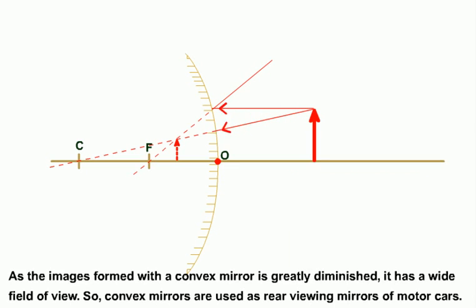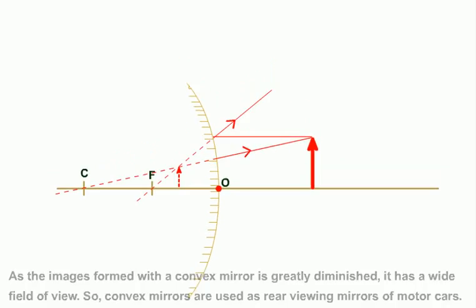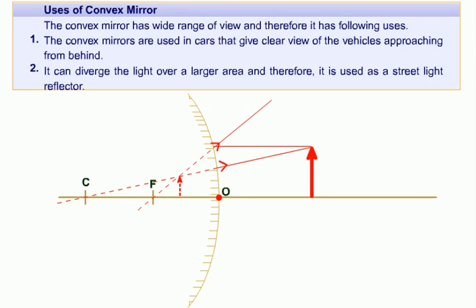As the image formed with a convex mirror is greatly diminished, it has a wide field of view. So convex mirrors are used as rear viewing mirrors of motor cars. Now look at the uses of convex mirrors.